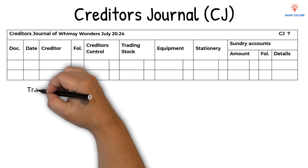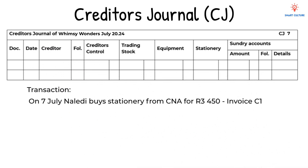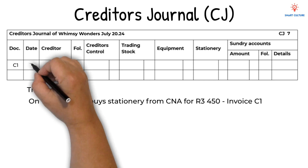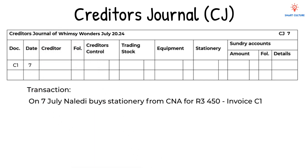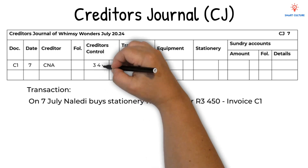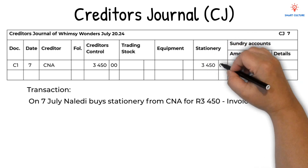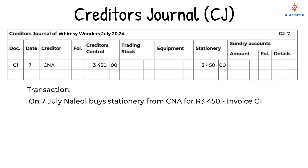Let's look at an example. On the 7th of July, Naledi buys Stationery from CNA for R3450, and she renumbers the invoice as Invoice C1. It is recorded in the CJ as follows: the document is C1, the date is the 7th, the creditor is CNA. We always record the amount in the Creditor's Control column, and in this case she bought Stationery on credit, so we enter the amount in the Stationery column as well.